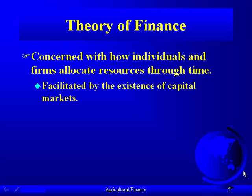In terms of allocation of resources through time, you're right here doing that. Is getting a degree at A&M cheap? It costs money. You are basically taking your resources today — your foregone income that you could be making, the tuition, the money, your room and board, transportation — and expending those resources today for the prospect of getting a better job in the future.